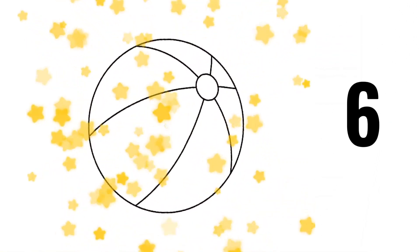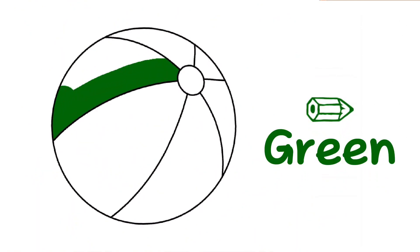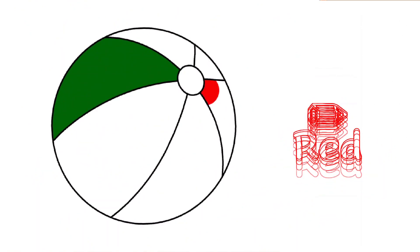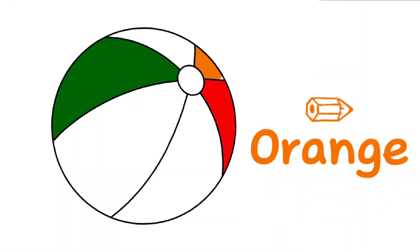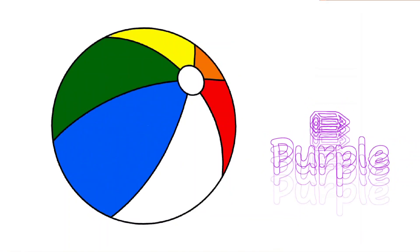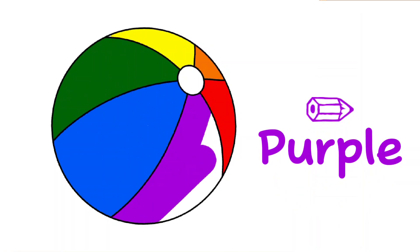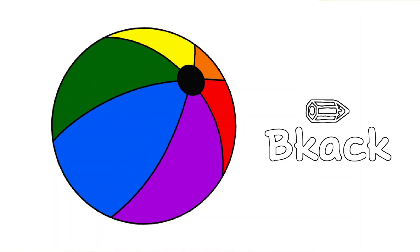Our shape is ready. Now we do colors. Green, red, orange, yellow, blue, purple, black. And our shape is ready.